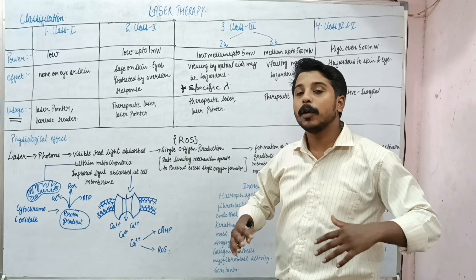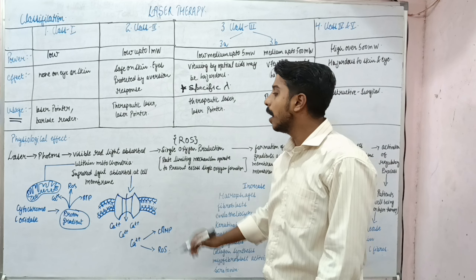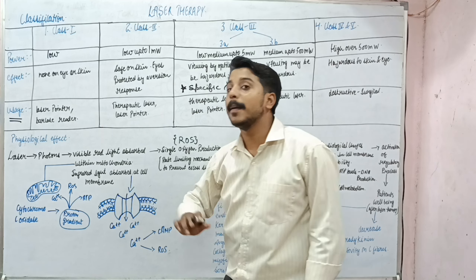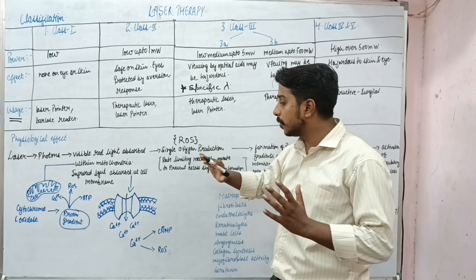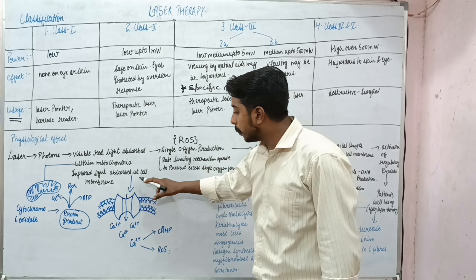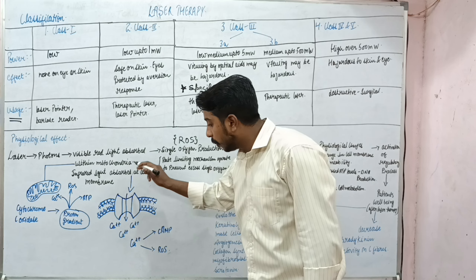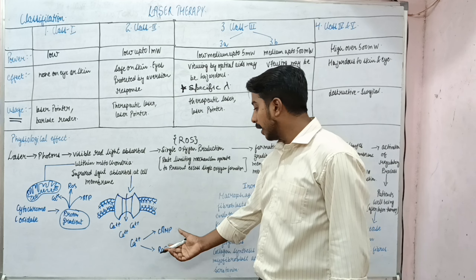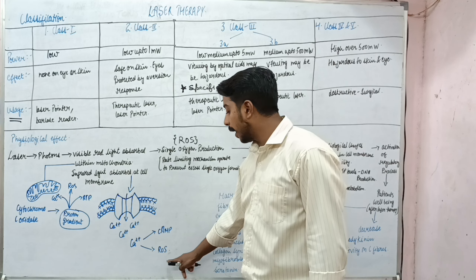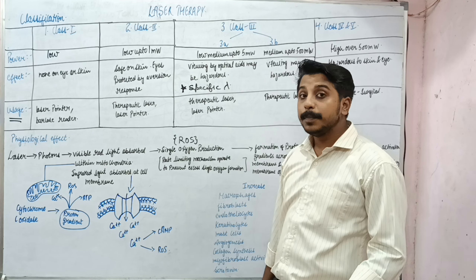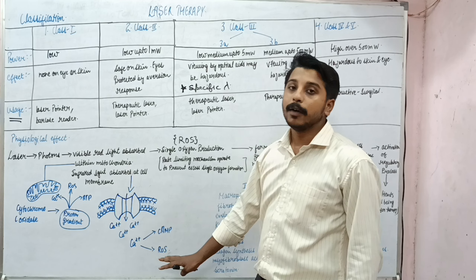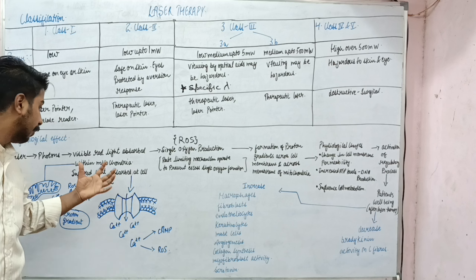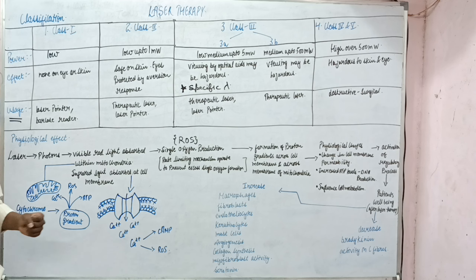IR light is absorbed at the cell membrane level. Laser wavelengths close to the infrared are absorbed at the cell membrane, which increases the permeability to calcium. This calcium influx in turn forms cyclic AMP and reactive oxygen species, which is beneficial for cellular activity — increasing cellular activity and repair.